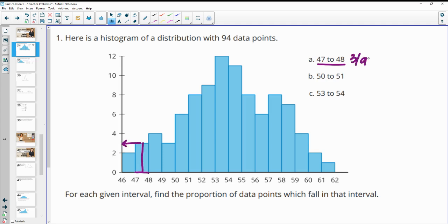So this is three data points out of 94, and then you could just divide these in your calculator to get 0.0319, or you could leave it as the fraction.